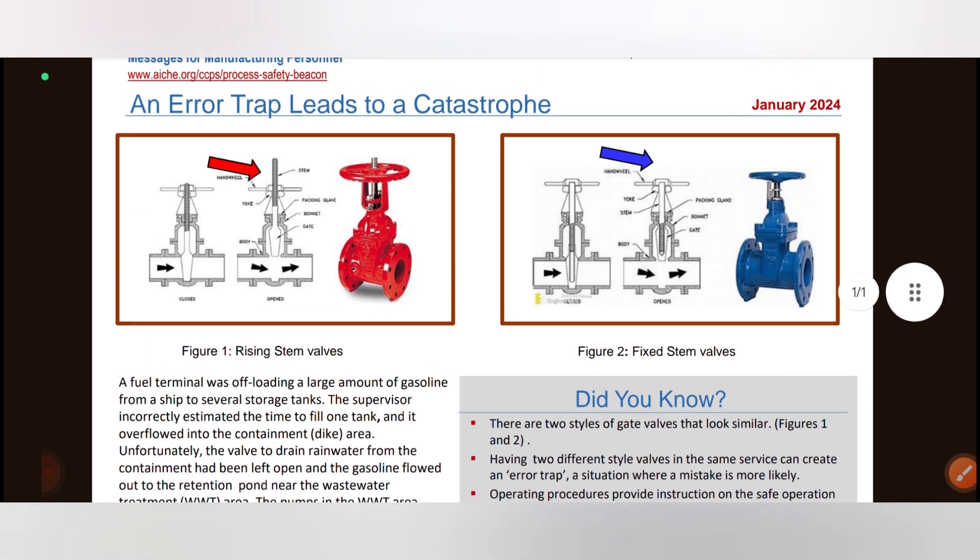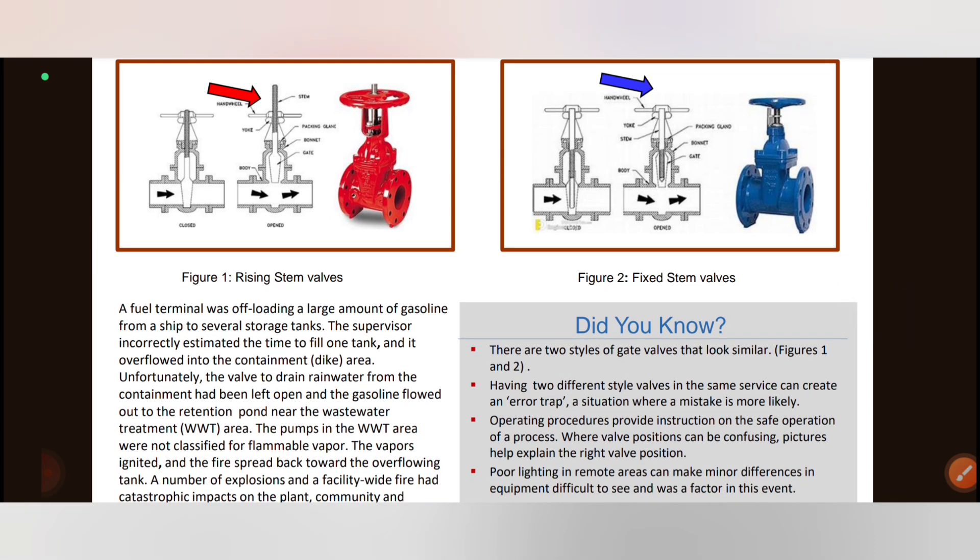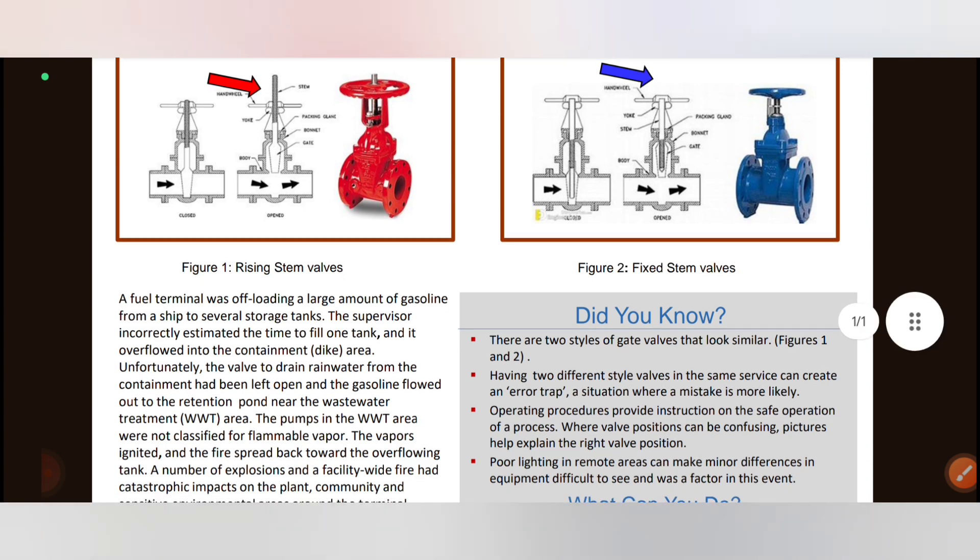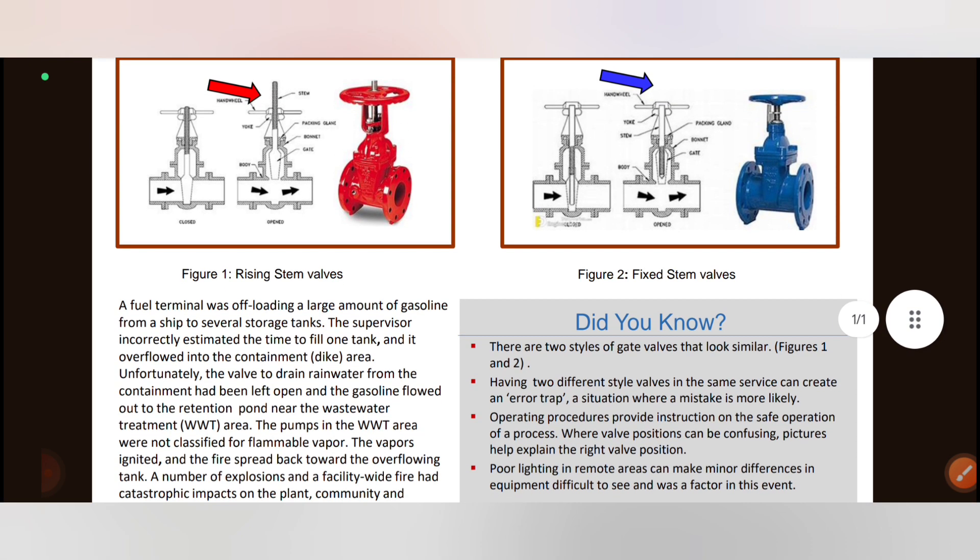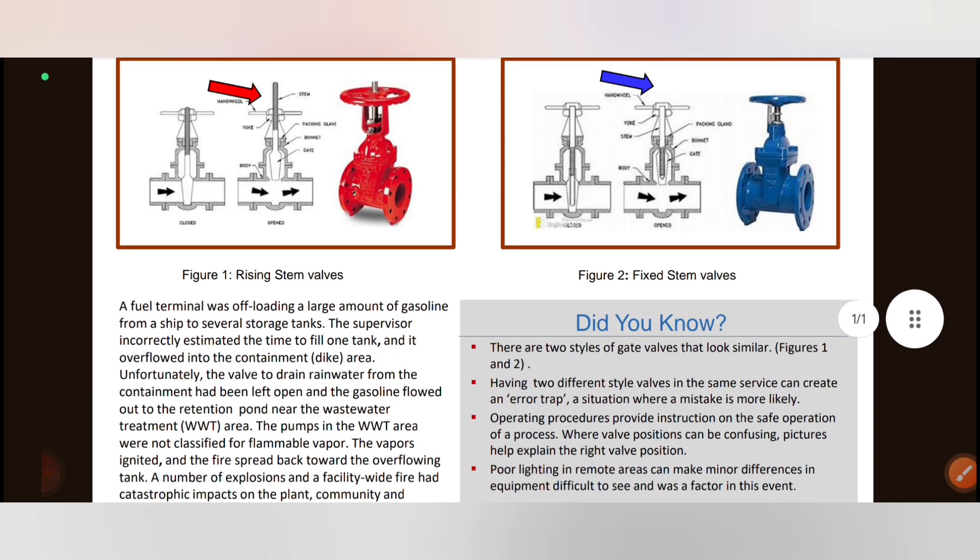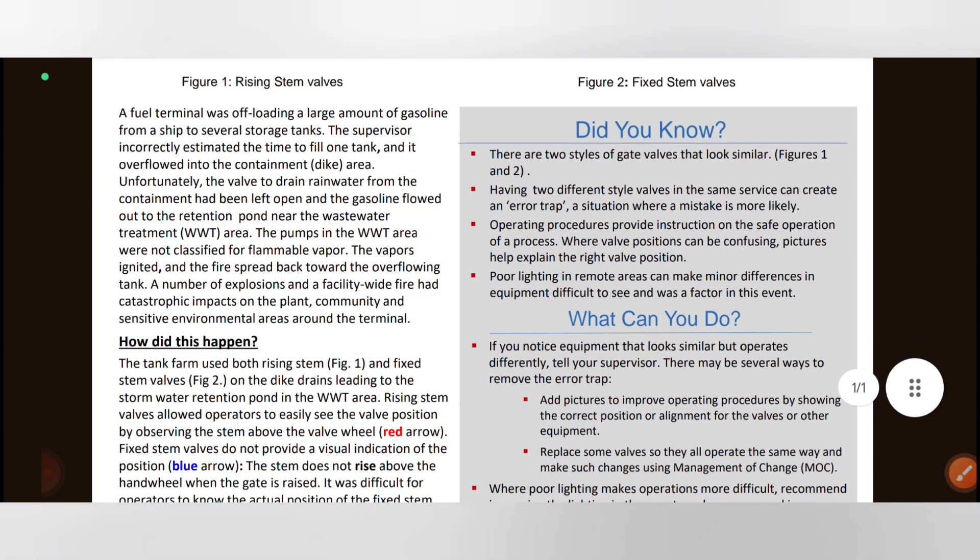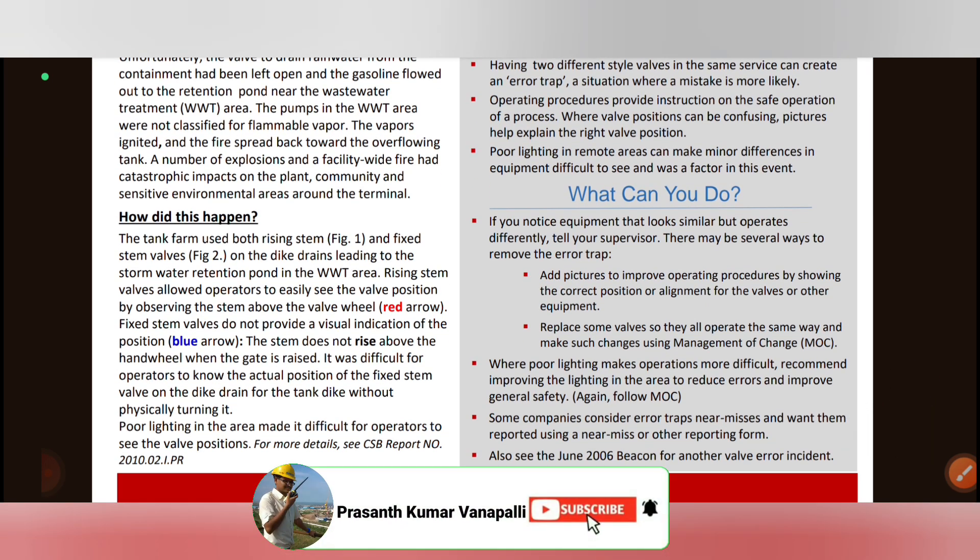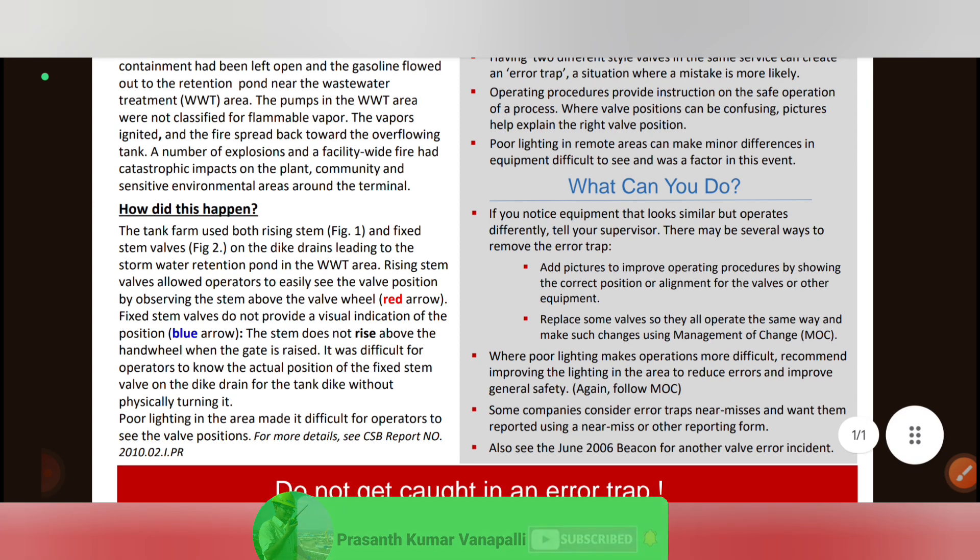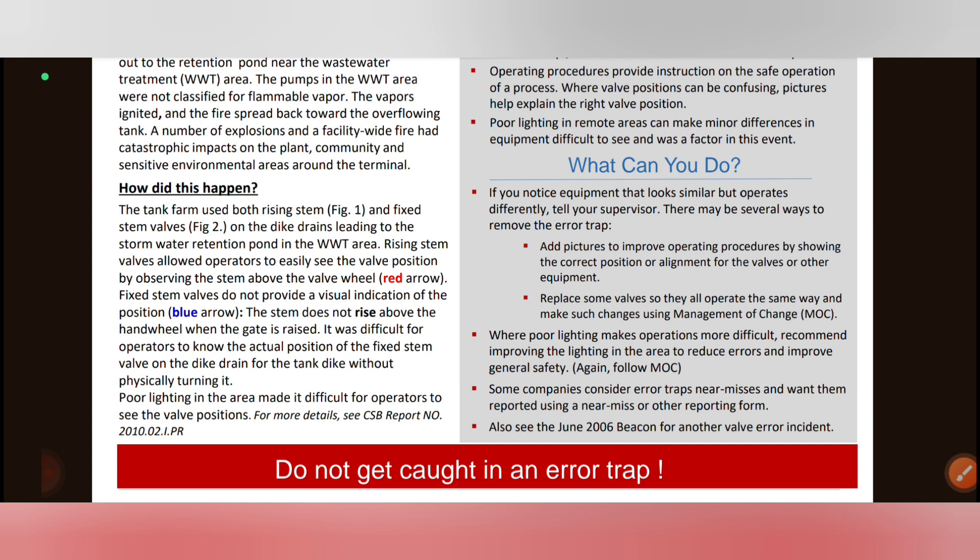To improve the operating procedures, if you have a non-rising stem valve and need to rotate it, you can use indicator boards. And in remote areas and critical areas, you should add lighting. Using indicator boards, you can identify the valve position exactly. These mistakes can be prevented. If you notice equipment that looks similar but operates differently, tell your supervisor. There may be several ways to remove error traps immediately.